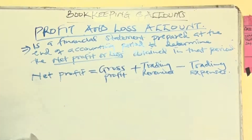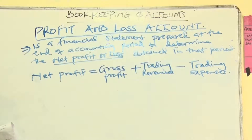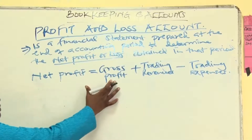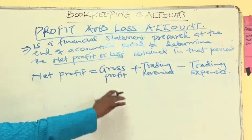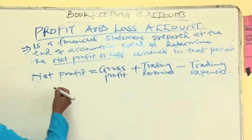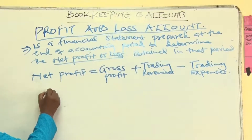I am using the word 'trading' meaning you only deal with the expenses or revenues which affect the business — which affects only the business, not the person or the proprietor. We know how to get the gross profit. Now, can we look at the examples?